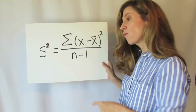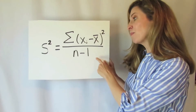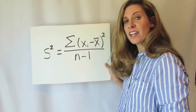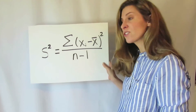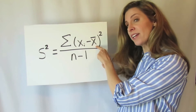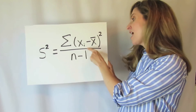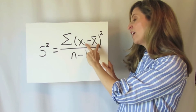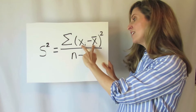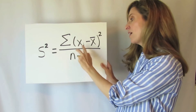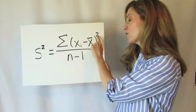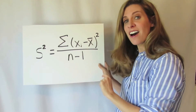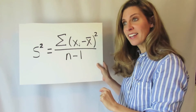This is the formula for the sample variance. The symbol for the variance is s squared. And the formula, as you can see, measures the squared deviations from the mean — the sum of squared deviations or differences of each value from the mean.